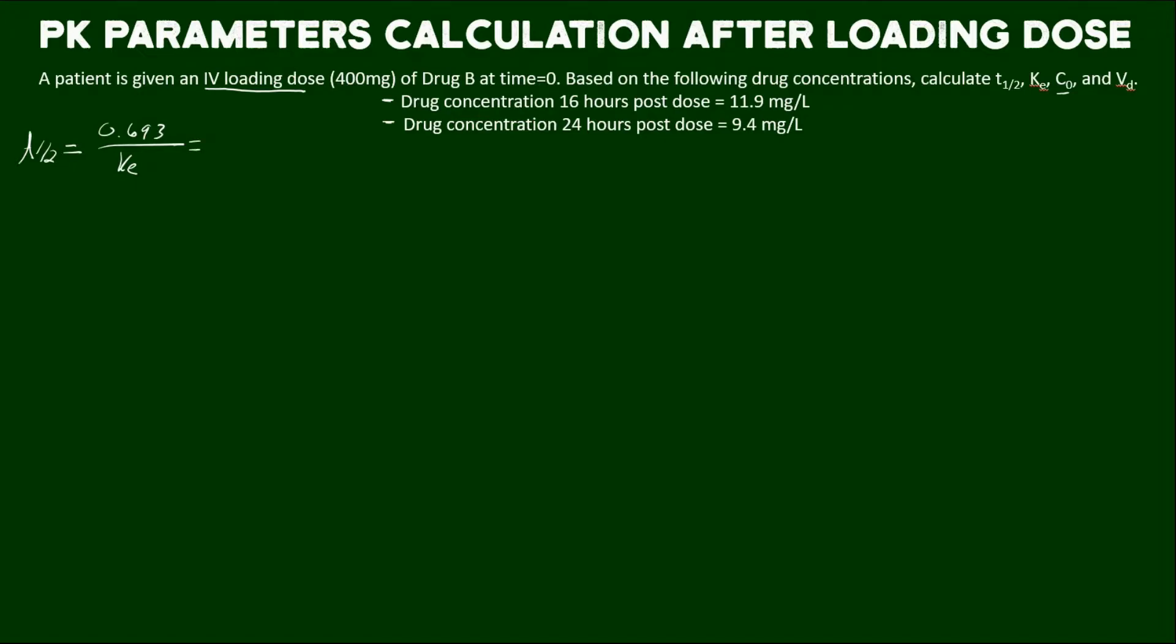The elimination rate constant also has a couple different calculation forms. One of the most common that we'll see, especially with concentrations of a drug, is the following. This equation is the negative of the natural log of concentration 1 minus the natural log of concentration 2 over the corresponding time 1 and time 2 at which the concentrations were measured. So let's plug this in and solve.